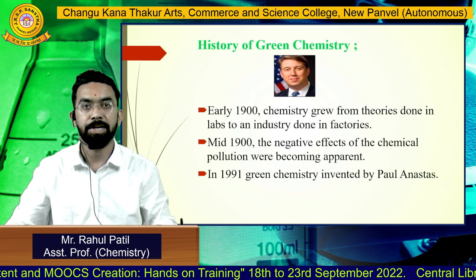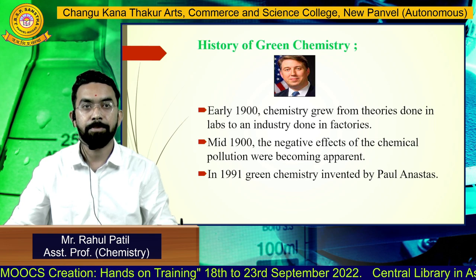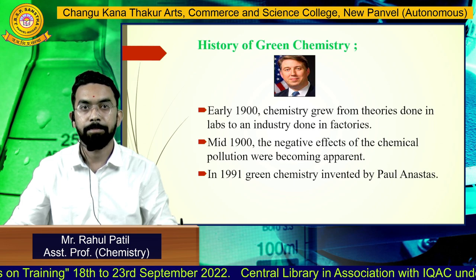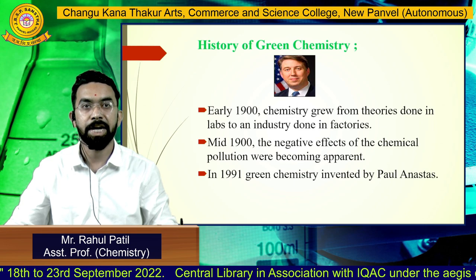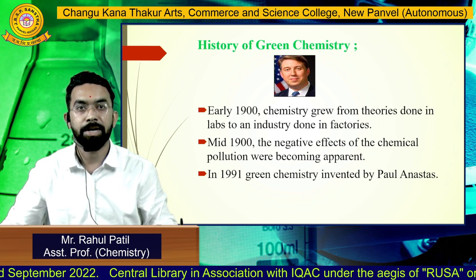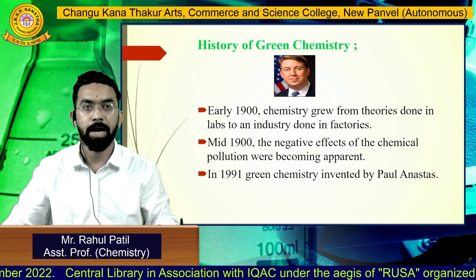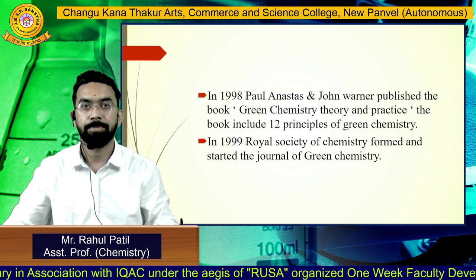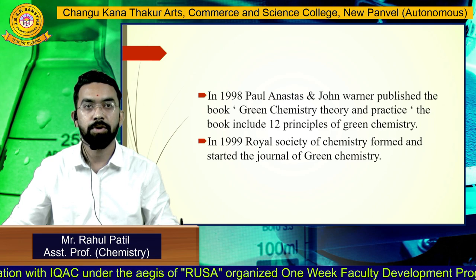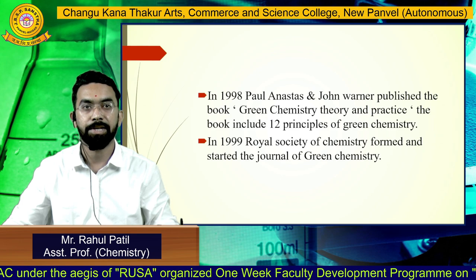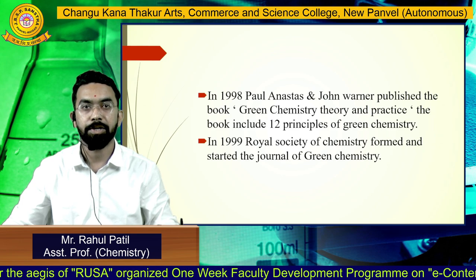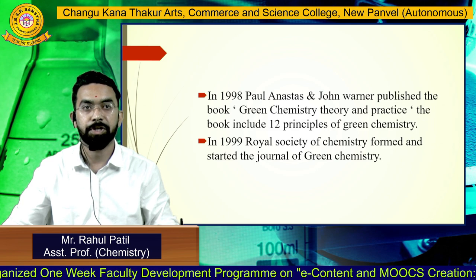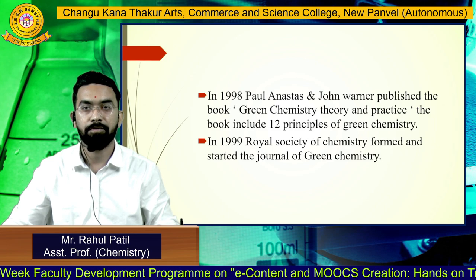History of Green Chemistry. In the early 1900s, chemistry grew from experiments done in labs to an industry done in factories. By the mid-1900s, the negative effects of chemical pollution were becoming apparent. In 1991, Green Chemistry was invented by Paul Anastas. In 1998, Paul Anastas and John Warner published the book Green Chemistry: Theory and Practice, which includes 12 principles of Green Chemistry. In 1999, the Royal Society of Chemistry formed and started the Journal of Green Chemistry.